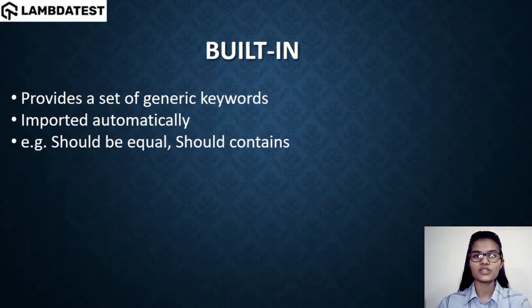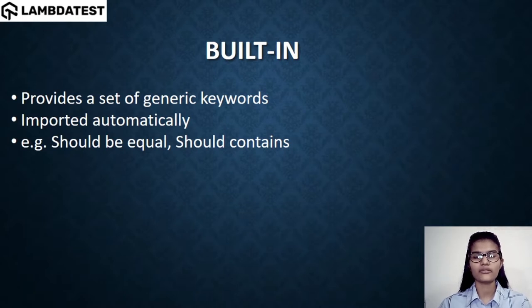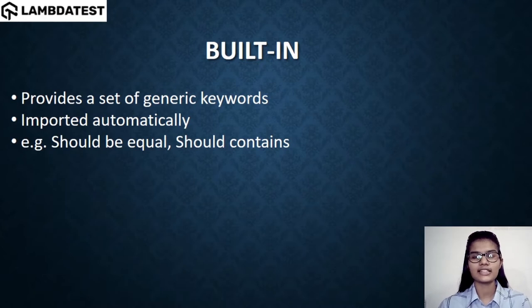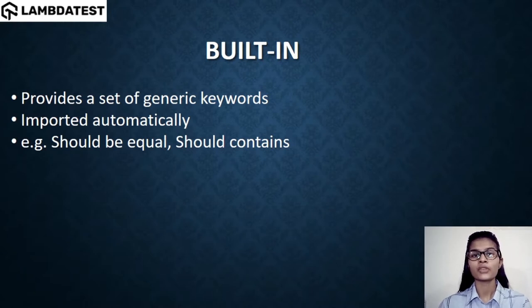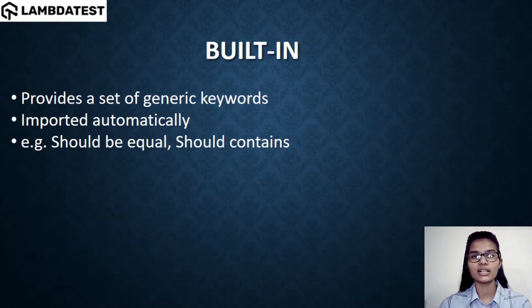The Built-in library is imported automatically, so whenever you are using keywords from the Built-in library, those things get imported automatically. A simple example for the Built-in library would be keywords like 'Should Be Equal' or 'Should Contain' — these are the generic keywords we have in the Built-in library. Always remember, whenever you require a set of generic keywords for your testing, refer to the Built-in library.